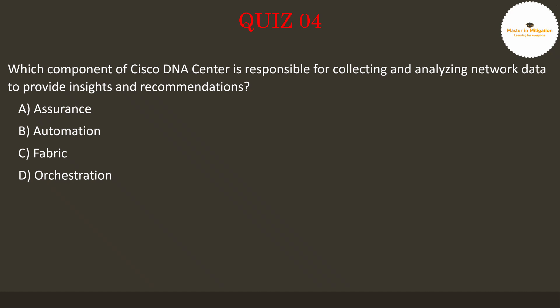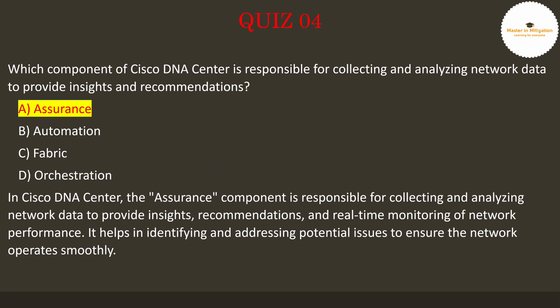The answer is A. Assurance. In Cisco DNA Center, the Assurance component is responsible for collecting and analyzing network data to provide insights, recommendations, and real-time monitoring of network performance. It helps in identifying and addressing potential issues to ensure the network operates smoothly.